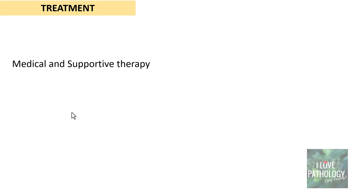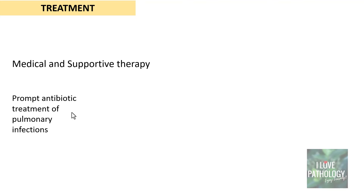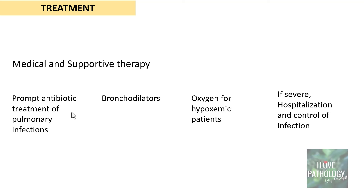How do you treat these patients? If they are smokers, you must ask them to stop smoking. The main treatment involves medical and supportive therapy; surgical treatment plays a minor role, only when bronchiectasis is localized and complicated. Medical treatment includes antibiotics to clear pulmonary infections, bronchodilators to clear the airway despite the dilated bronchi, and oxygen supplementation if the patient is hypoxemic. Hospitalization is important for control of infection in severe cases.